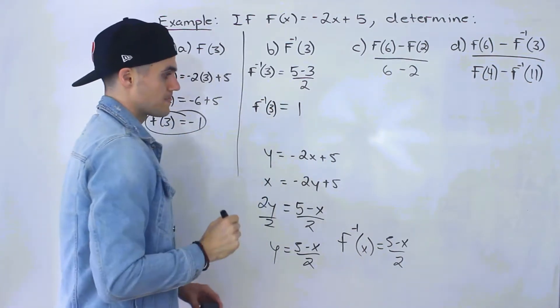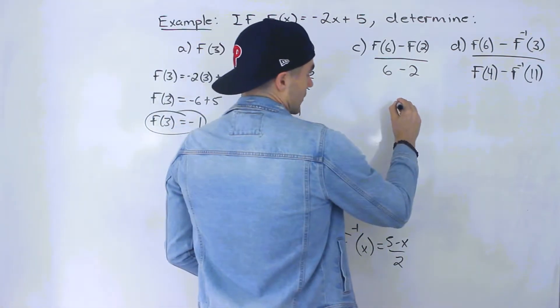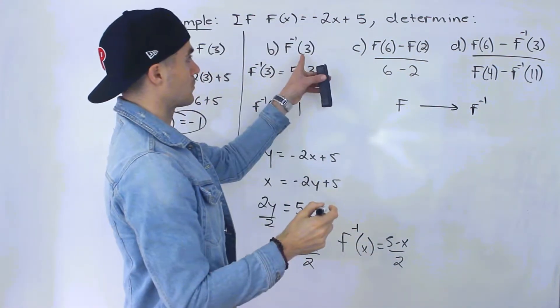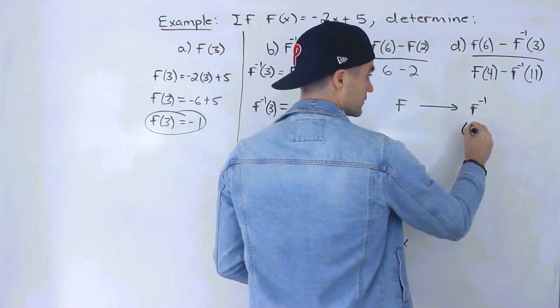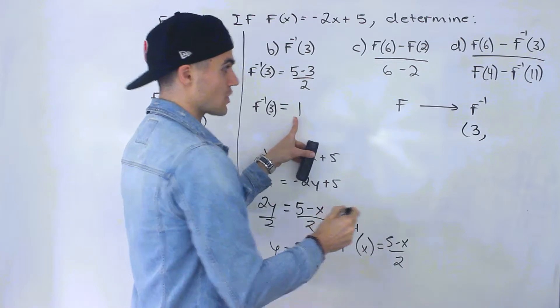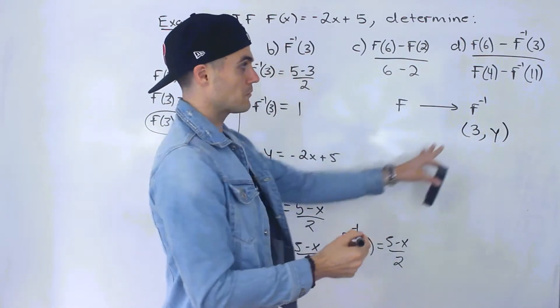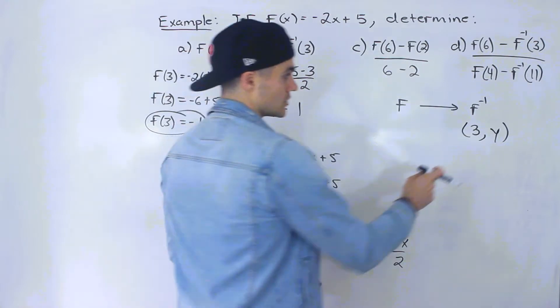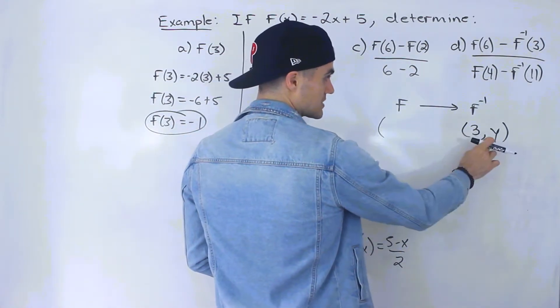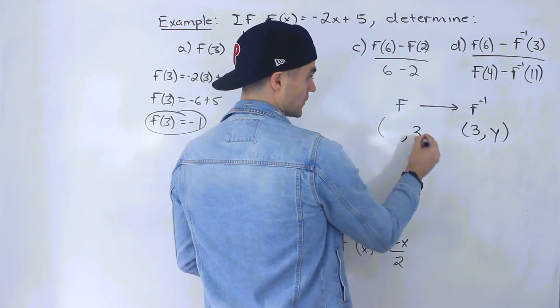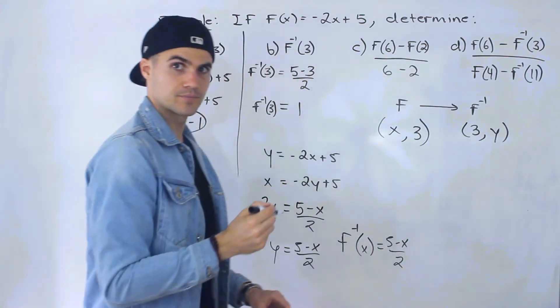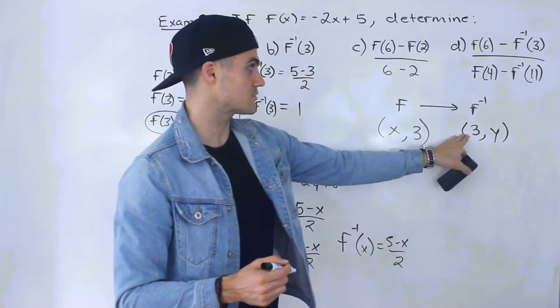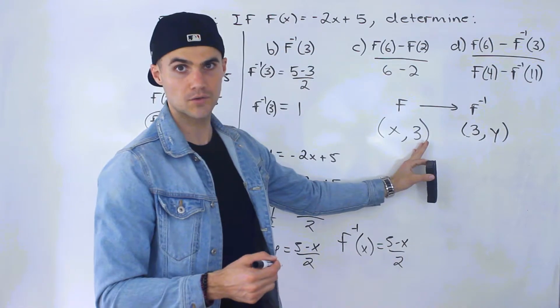Now another way that we can do this. So if we have a function and then we have its inverse, notice that we were plugging in an x value of 3 into the inverse, and then we were solving for that y value. Well remember the inverse and the function, the way they relate is just the x values and y values are interchanged. So what we can do is we could just interchange these. So if we were using the function, basically the y value would equal 3, and we'd be solving for the x value. That's the same as the function having a y value of 3.